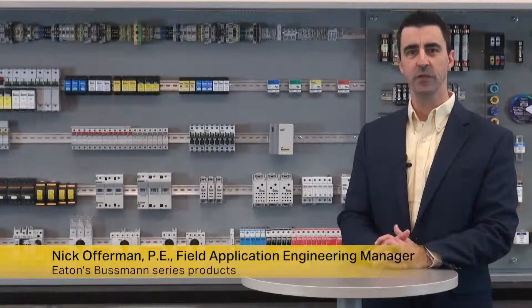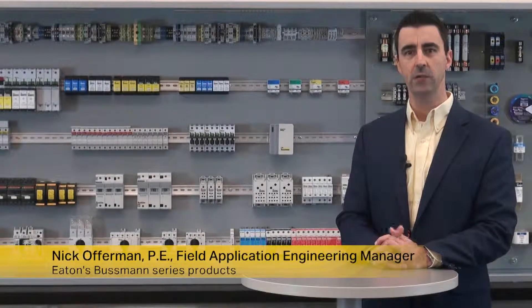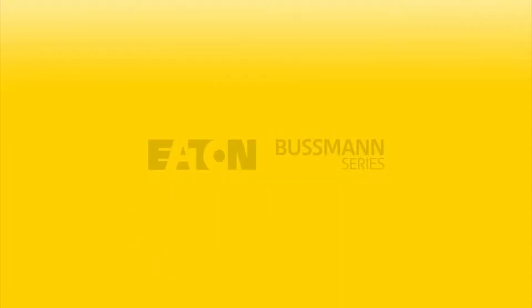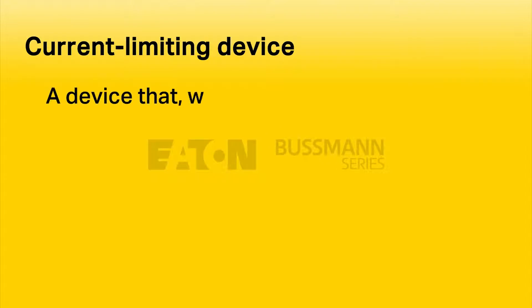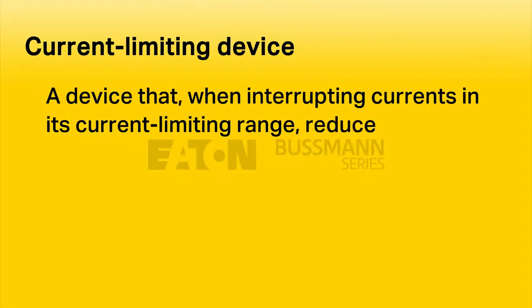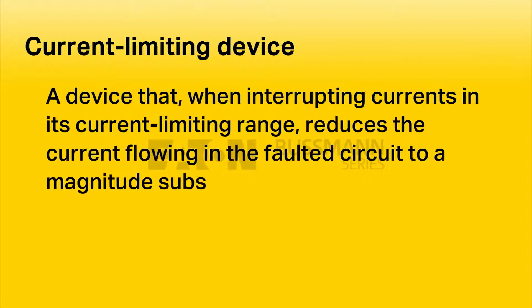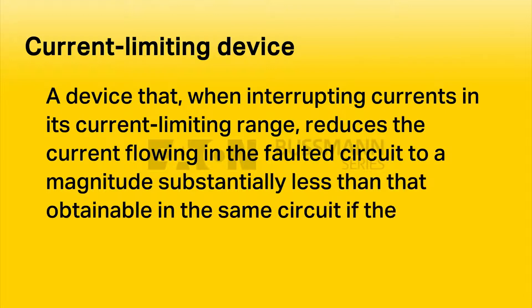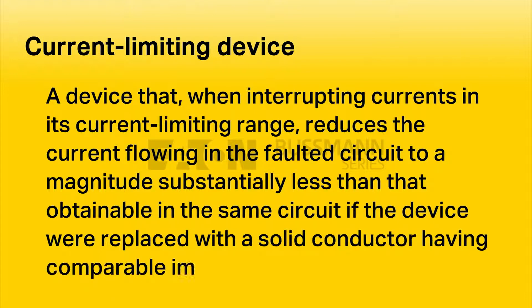Current limitation is a function of how quickly the fuse can react to a fault and clear it before the fault current can build up to destructive levels. NEC 240.2 defines a current limiting device as a device that, when interrupting currents in its current limiting range, reduces the current flowing in the faulted circuit to a magnitude substantially less than that obtainable in the same circuit if the device were replaced with a solid conductor having comparable impedance.